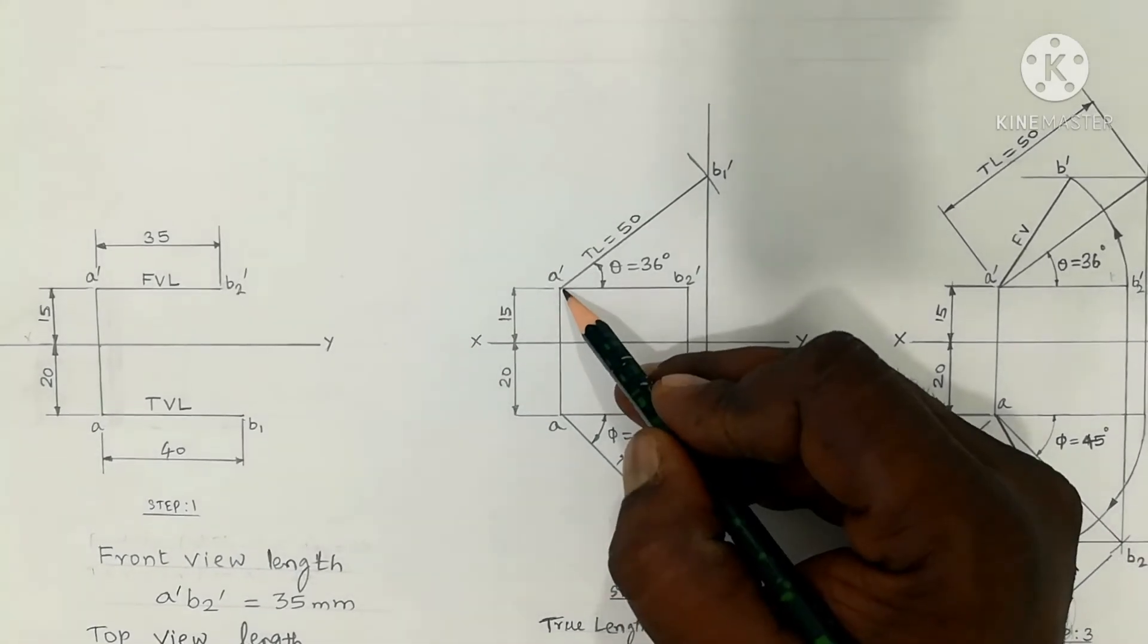Mark point B1 and drop a vertical projector to B2 dash. Next, using A as center of your compass, 50mm is the true length. Cut the vertical projector with 50mm radius.